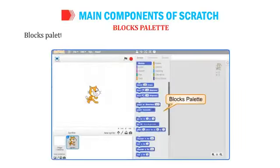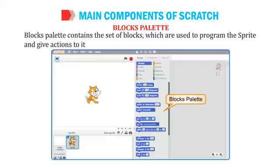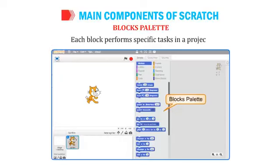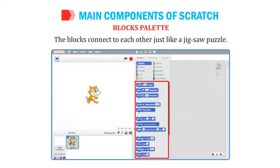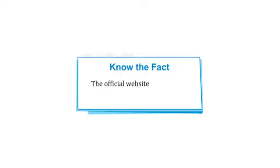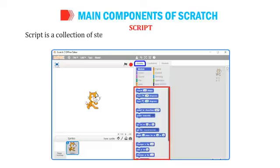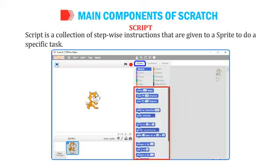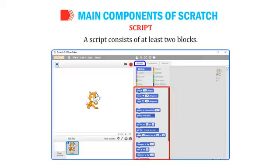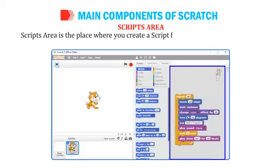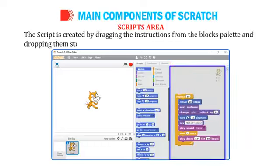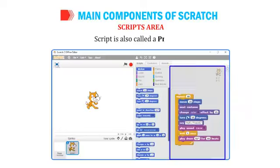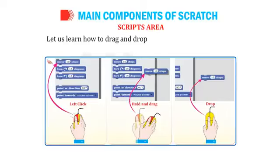The Blocks Palette contains the set of blocks used to program the sprite and give actions to it. Each block performs specific tasks in a project and is used to create scripts in Scratch — the blocks connect to each other just like a jigsaw puzzle. A Script is a collection of step-wise instructions given to a sprite to do a specific task, and consists of at least two blocks. The Scripts Area is where you create a script by dragging instructions from the blocks palette and dropping them stepwise on top of each other. A script is also called a program.